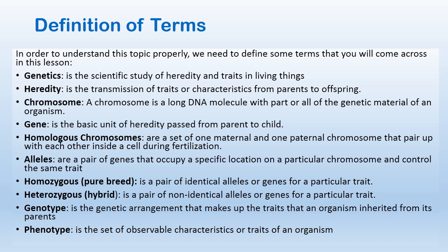Homozygous, which is used to refer to pure breed, is a pair of identical alleles or genes for a particular trait. While heterozygous, which is hybrid, is a pair of non-identical alleles or genes for a particular trait. Genotype is the genetic arrangement that makes up the traits that an organism inherited from its parents. Phenotype is the set of observable characteristics or traits of an organism.